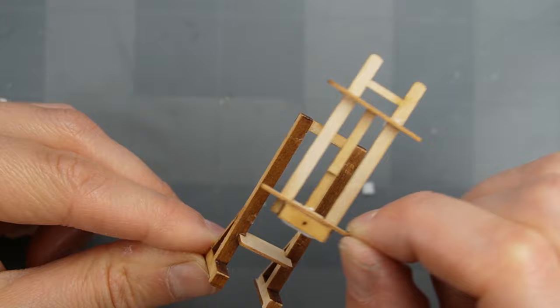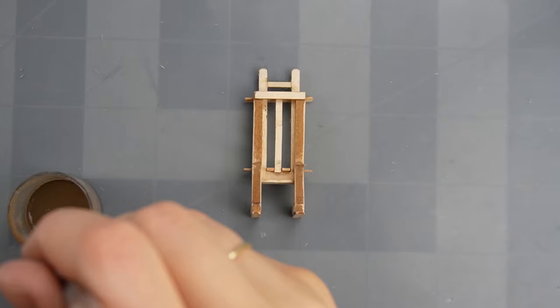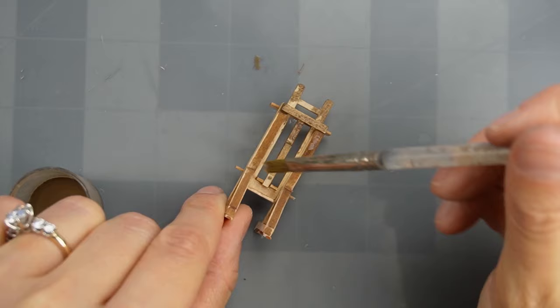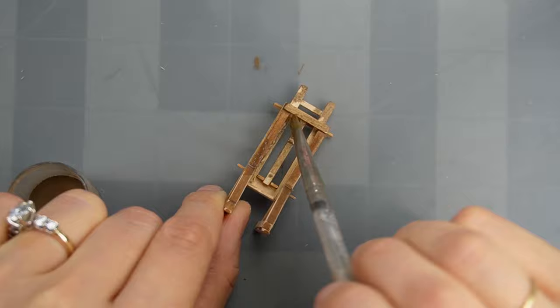Then I glued the pieces together to prep for paint. Rather than staining all of the pieces before assembly, I decided to assemble the easel first, knowing I would be painting and aging it.